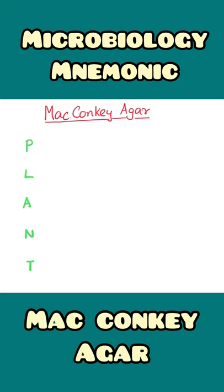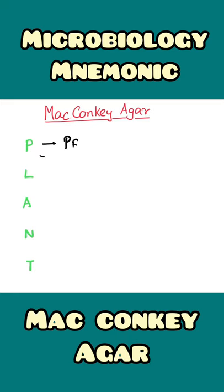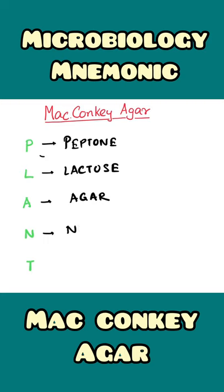We can remember the constituents by a very simple mnemonic which reads PLANT. P stands for Peptone, L stands for Lactose, A stands for Agar, N stands for Neutral Red which is an indicator, and T stands for Taurocolate, which is a bile salt.